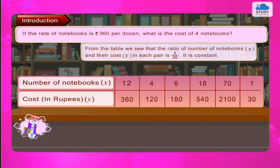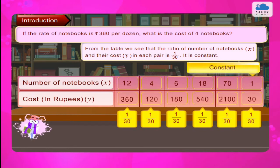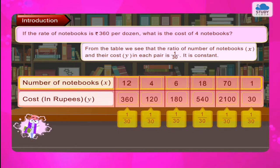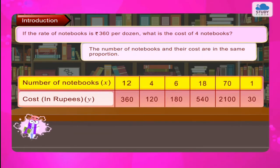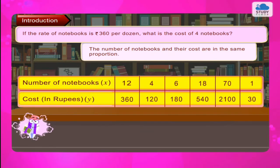From the table we see that the ratio of number of notebooks x and their cost y in each pair is 1 upon 30. It is constant. The number of notebooks and their cost are in the same proportion.